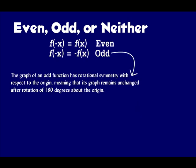The graph of an odd function has rotational symmetry with respect to the origin, meaning that its graph remains unchanged after rotating 180 degrees about the origin. Examples of odd functions are x, x to the third, and so on.